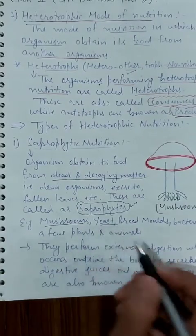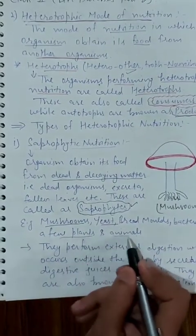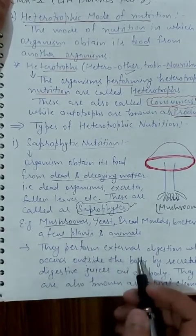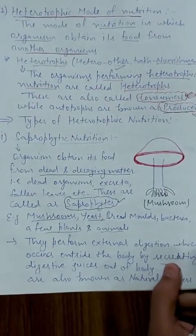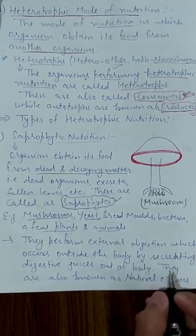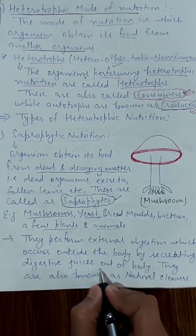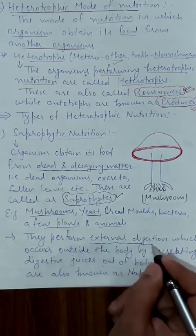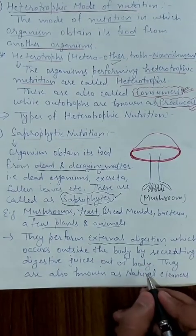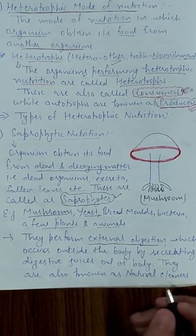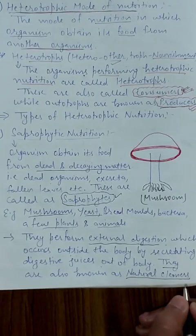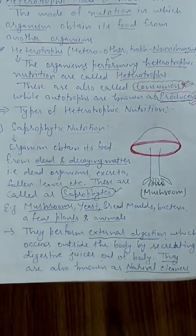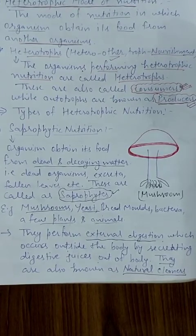Organisms which perform saprophytic nutrition are known as saprophytes. Examples are mushroom, yeast, bread mold, bacteria, a few plants, and a few animals. They perform external digestion, which occurs outside the body. They are also known as natural cleaners because they decompose dead matter and mix it in simple form into the soil.